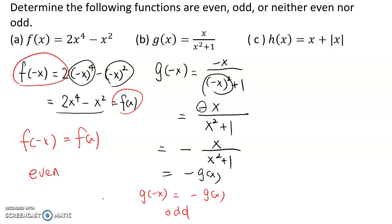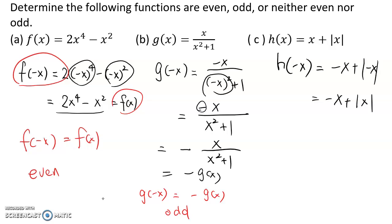For the last example, we want to find h of negative x. We replace x with negative x: negative x plus the absolute value of negative x. The absolute value turns negative numbers to positive, so that becomes negative x plus the absolute value of x. Can we turn it into h of x? No. Is it negative h of x? Well, negative h of x would be negative x minus the absolute value of x, so it's neither of those two.